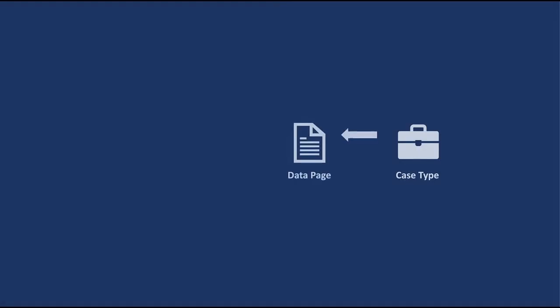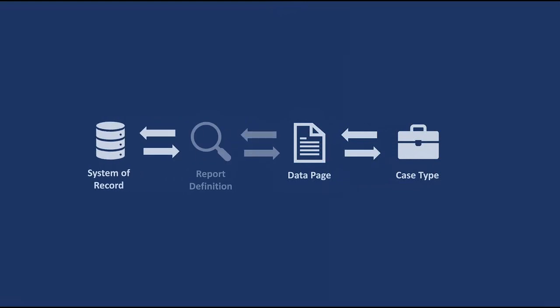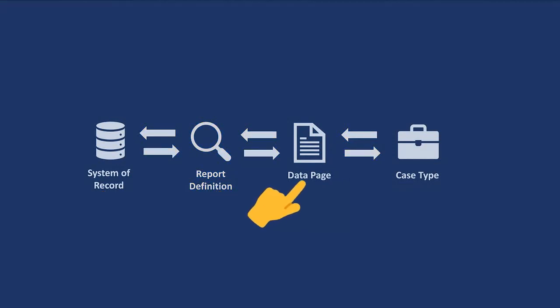A few videos back we talked about data pages, and we said that data pages play a role between our cases and our data records. A report definition is the actual rule responsible for retrieving information and sending it from the database to the data page. With this rule we are able to filter, order, and specify which attributes we want to retrieve from the database table.